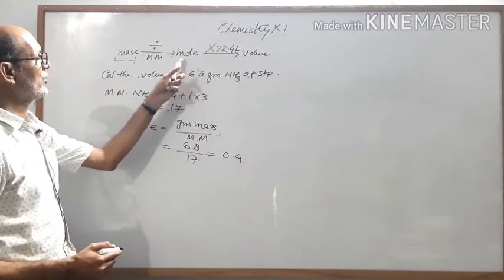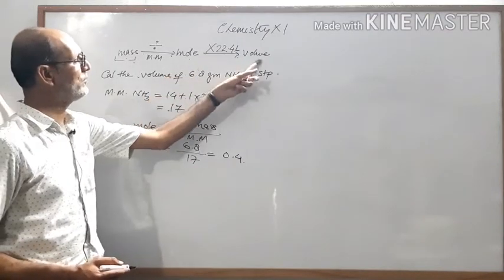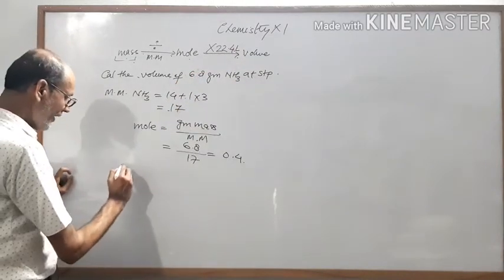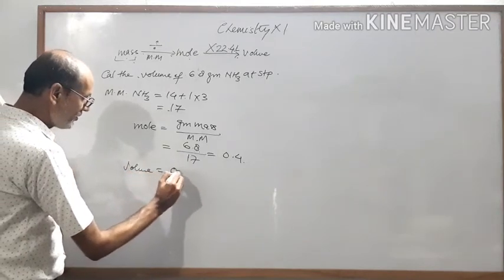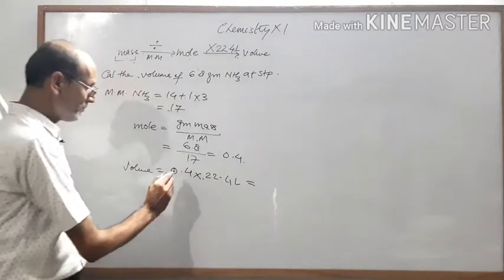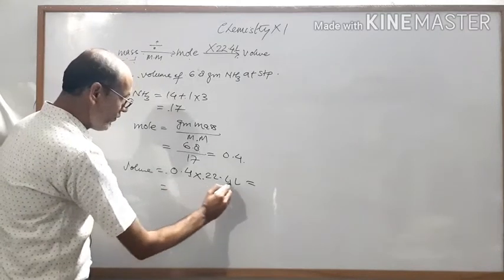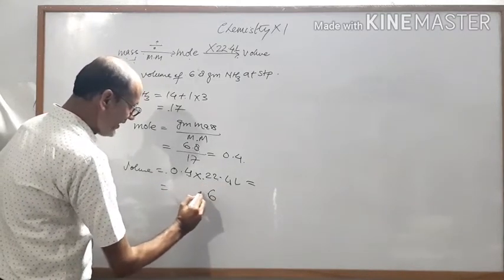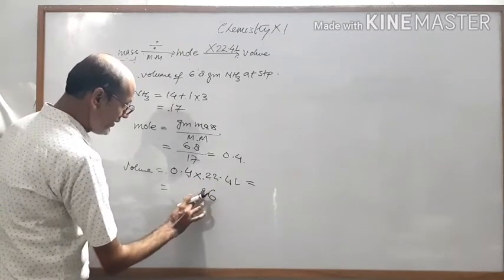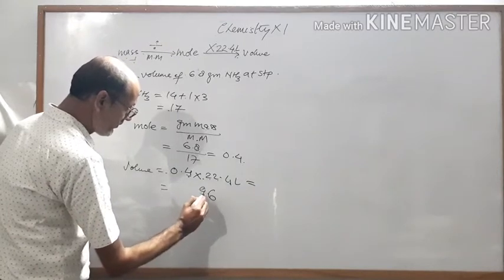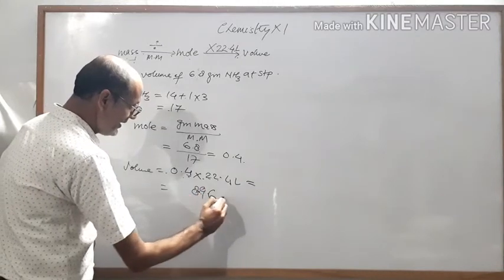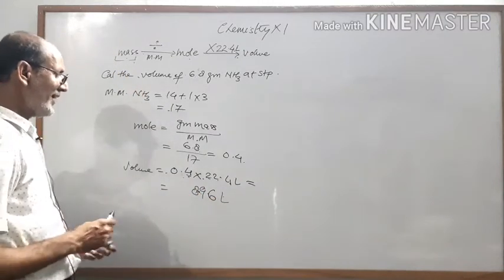After calculating the moles, you have to convert into volume by multiplying moles by 22.4. So volume equals 0.4 into 22.4, which gives 8.96 liters.